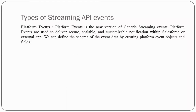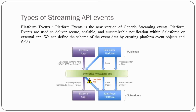Then we have platform events. Platform event is a new version of generic events. This platform event is used to deliver secure, scalable, and customizable notifications within Salesforce or to external applications. For platform events, we need to specify the schema by creating platform event objects and fields. Platform events provide flexibility to publish event notifications from Apex triggers, Process Builder, flows, and by using the Salesforce Platform API.